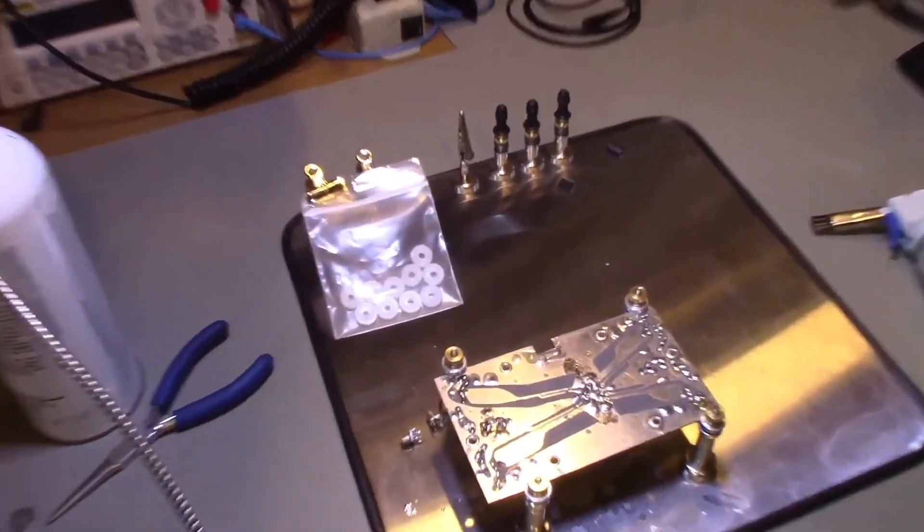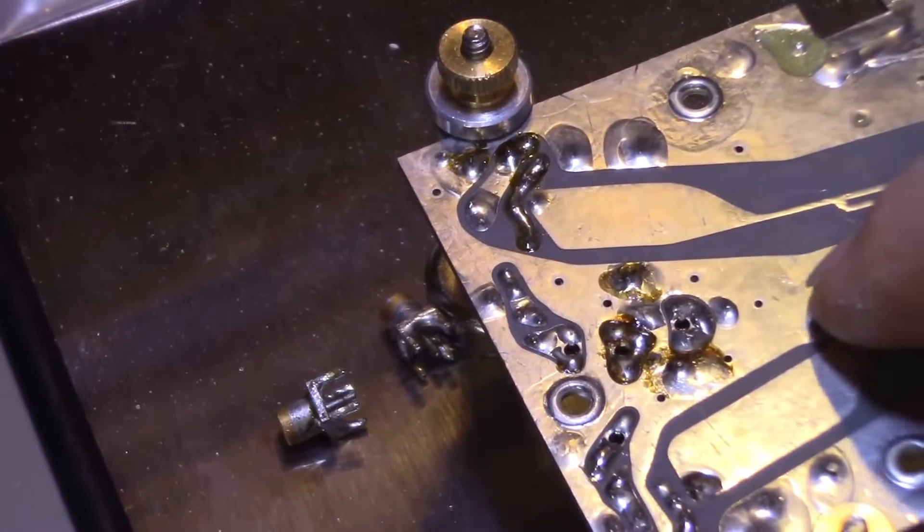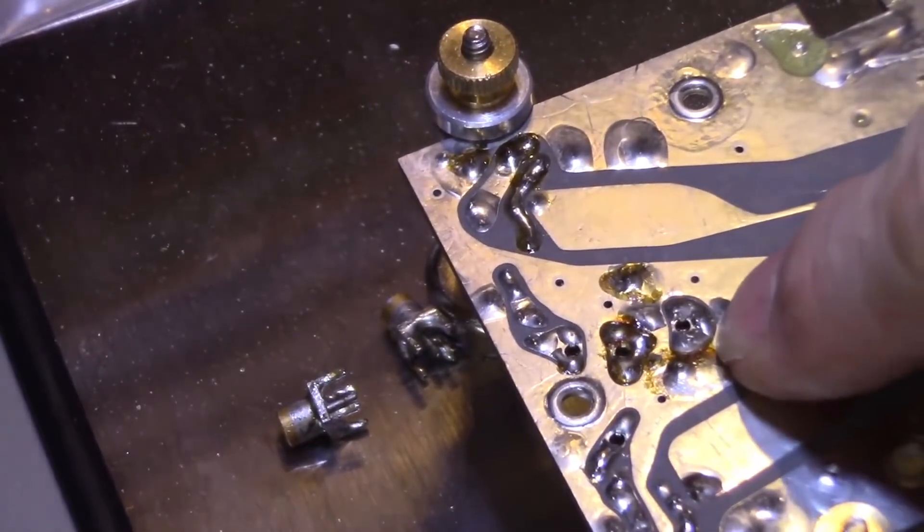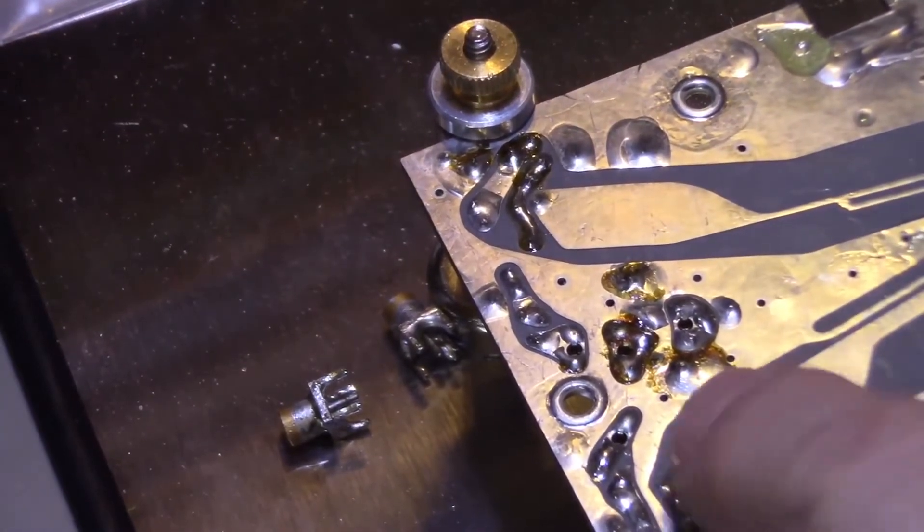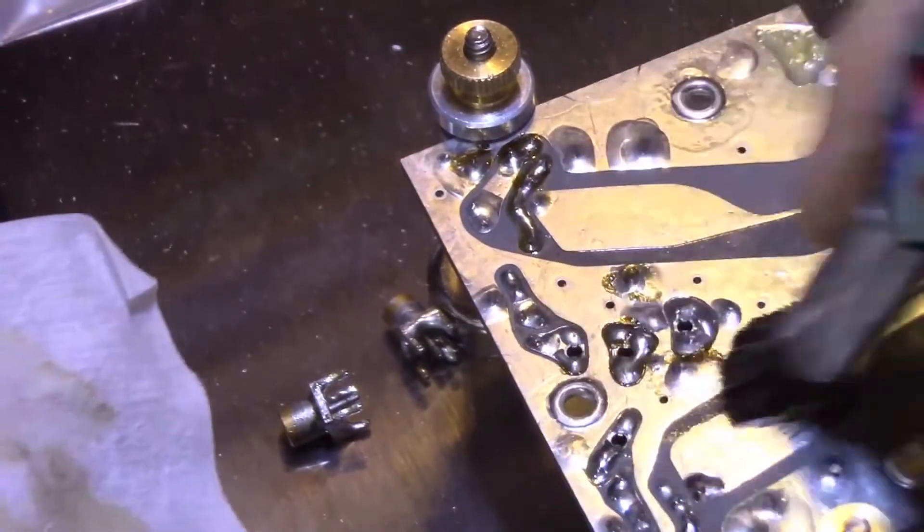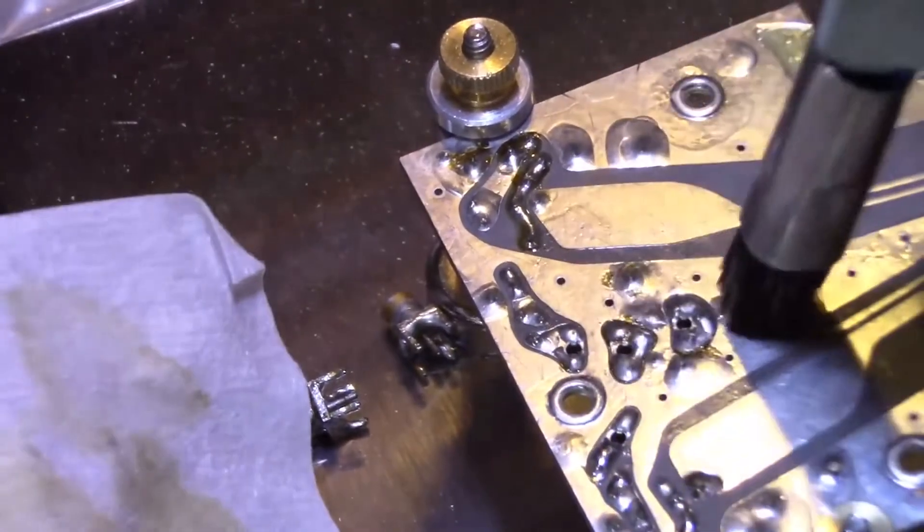This circuit board is like early 1980s vintage, so that flux has been on there for a long, long time. So that's a good test of a flux remover and it's coming off fairly easily.